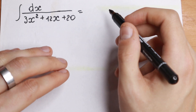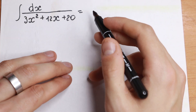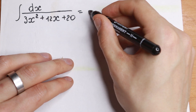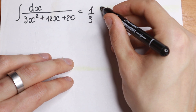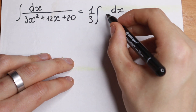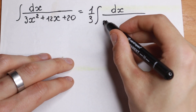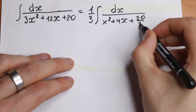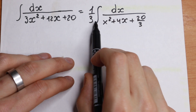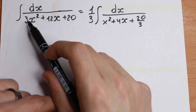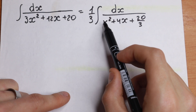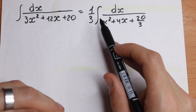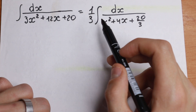I want to show you this, and after the video I want to see your comments about this solution. First of all, I want to factor 1 over 3 before the integration sign. So we factor out 3 from our denominator, giving us 1 third times the integral of dx over x squared plus 4x plus 20 thirds. Since 1 third is a constant, we can write it before our integral sign.